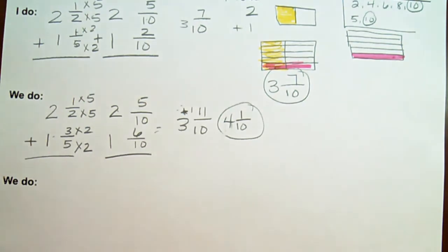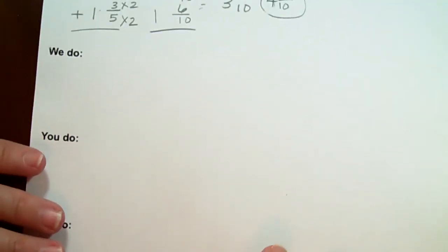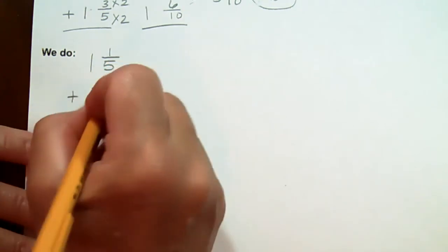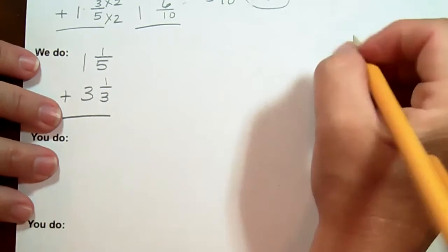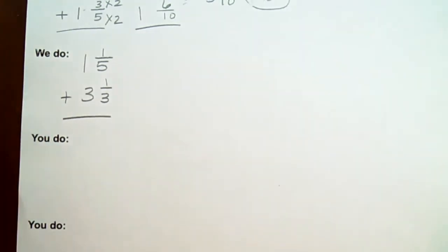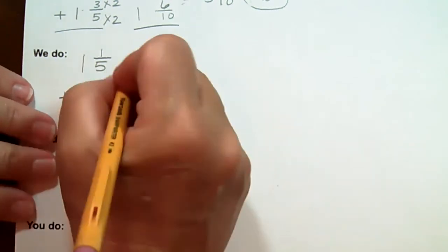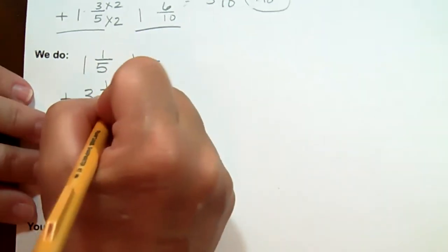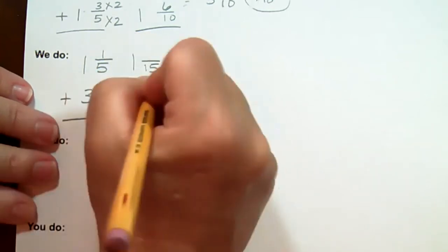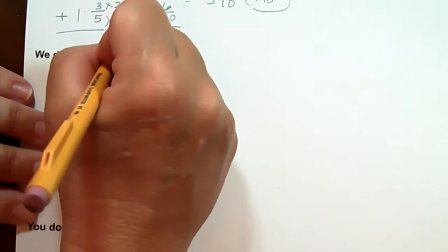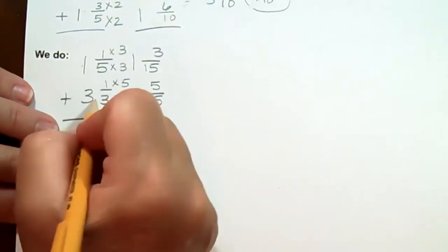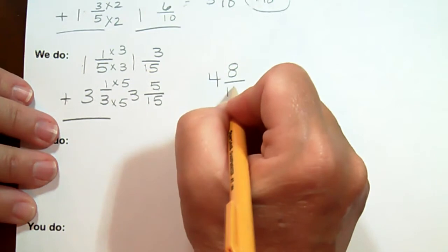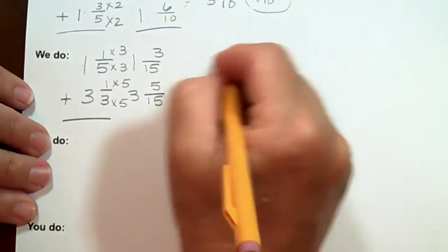The next problem: one and one-fifth plus three and one-third. A quick way to find the common denominator is to multiply the denominators — three times five is fifteen. One times five is five, and one times three is three. One plus three is four; three plus five is eight; and the denominator is fifteen. That answer is four and eight-fifteenths, and that is already in simplest form.